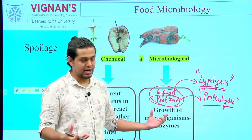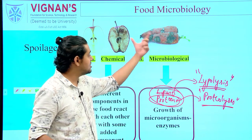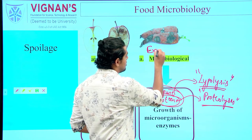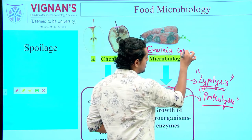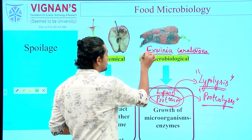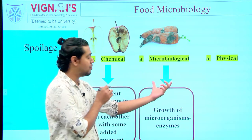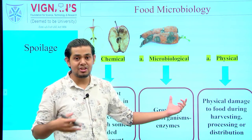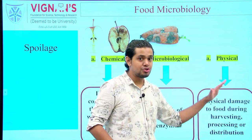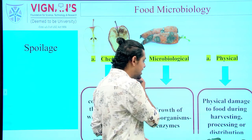Whenever enzymes are produced by microorganisms, they result in biological changes in the food product. As an example, a carrot undergoing bacterial soft rot is shown here. This particular disease in carrot is caused by Erwinia carotovora, where Erwinia is the genus name. That covers biological and microbiological changes. Physical changes refer to damage that fruits or vegetables undergo during harvesting, processing, or distribution.